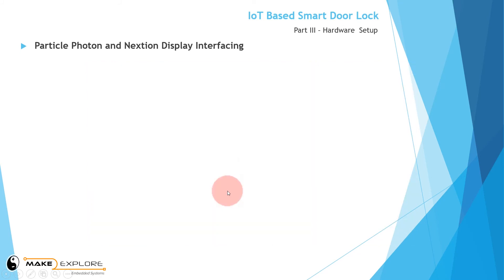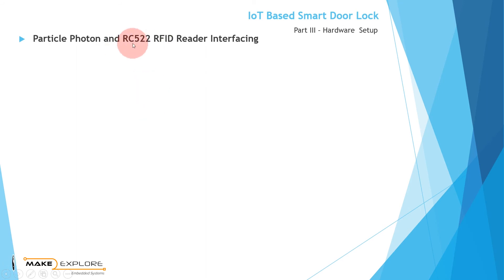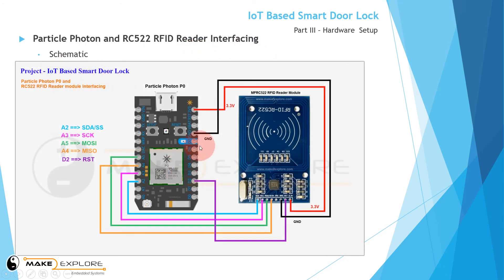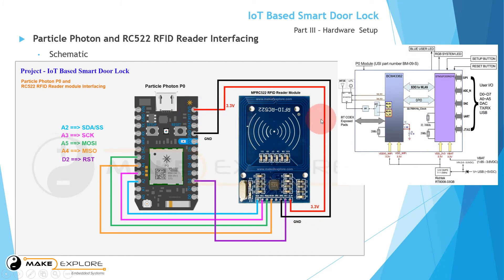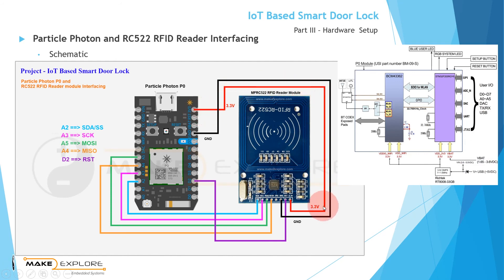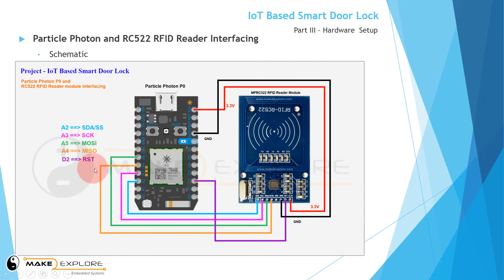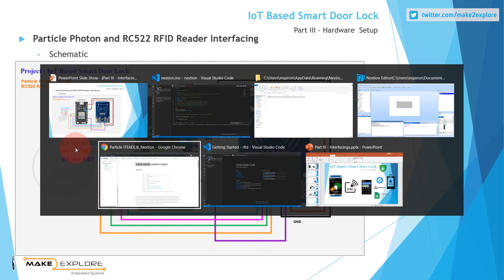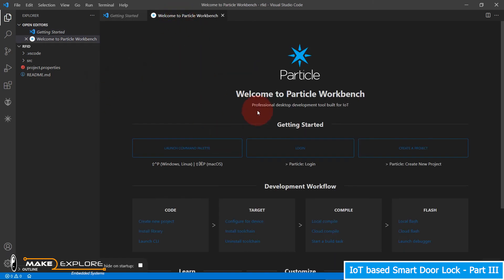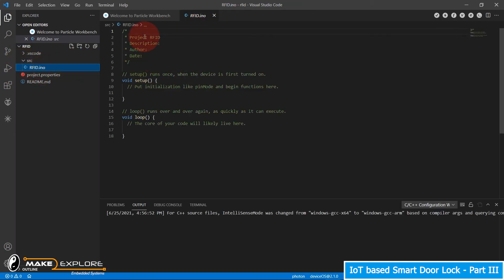Let's move forward and see the next interfacing: RC522 RFID reader. The Particle datasheet is shown here. We have the RFID module using Photon's 3.3V pin. The RFID reader requires current up to 13 to 26 milliamperes, and the Particle datasheet says the max load on the 3V3 pin is 100mA when used as output, so we can use it to power the RFID module. All connections in the circuit diagram are given in color coding, making it easy to connect. Let's create a new project for RFID in VS Code editor.